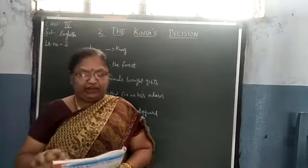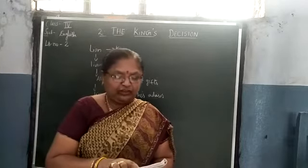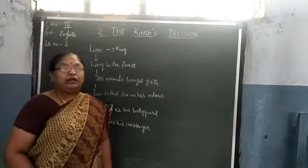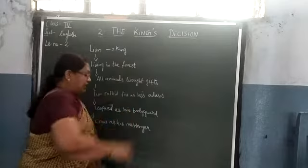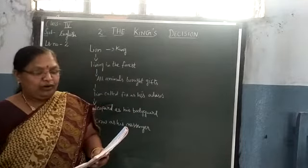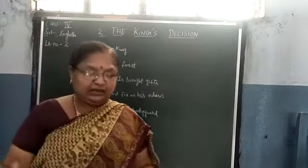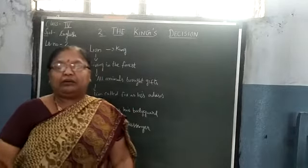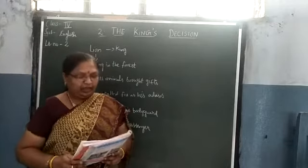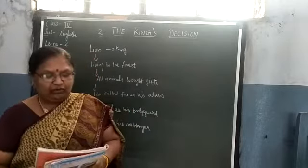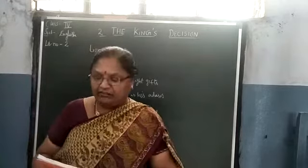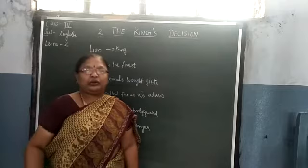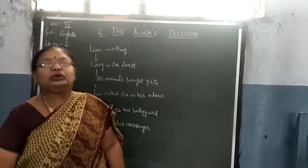All the animals brought him gifts. He felt very happy, but also very greedy. The more he got, the more he wanted. A king must have courtiers, he thought. He wanted to find out which of the animals would make the best courtier. So, he wanted to appoint animals as courtiers.